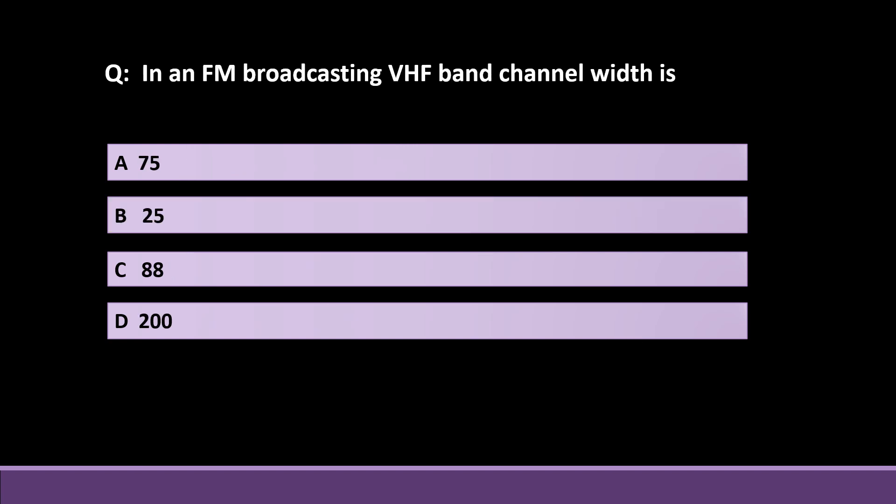Next question: in FM broadcasting, what is the VHF channel bandwidth? The options are: Option A — 75 KHz, Option B — 25 KHz, Option C — 88 KHz, and Option D — 200 KHz.